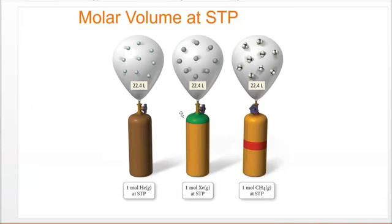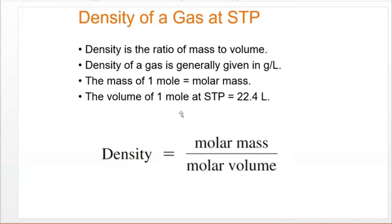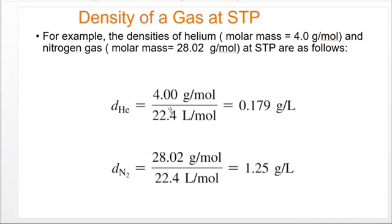We can then use this number to figure out our density at STP. So you can just take the molar mass of a gas divided by your molar volume at STP, meaning 22.4 to determine the density. So for helium, it would be four grams per mole divided by 22.4 liters and the density at STP will be 0.179 grams per liter.